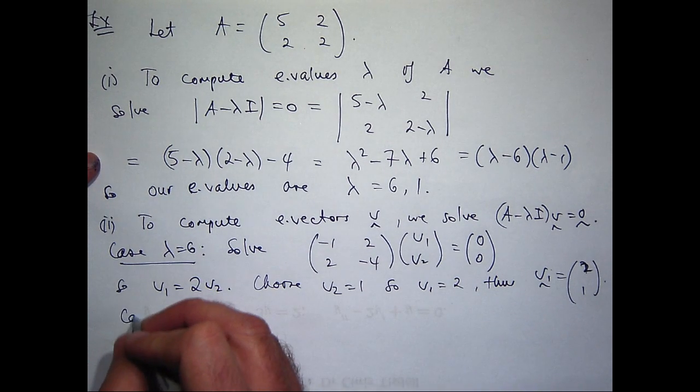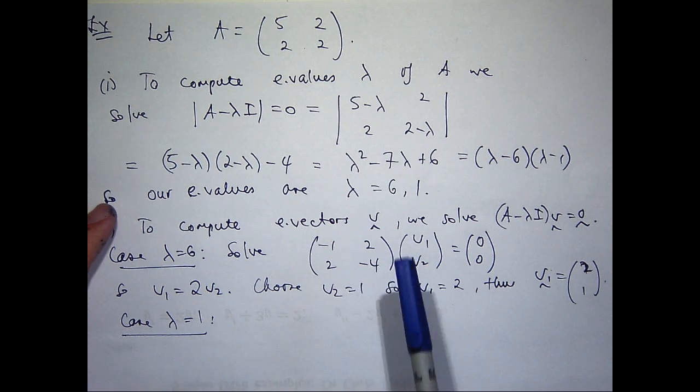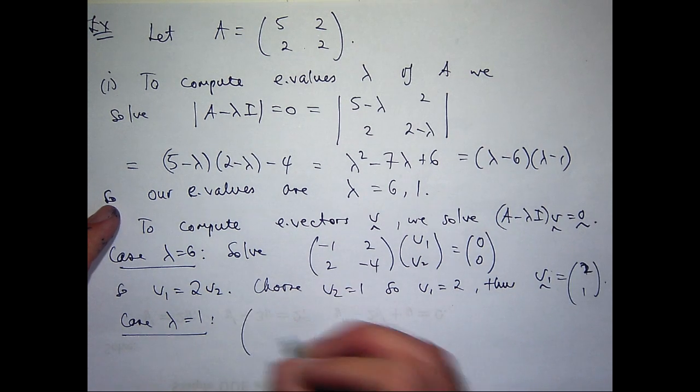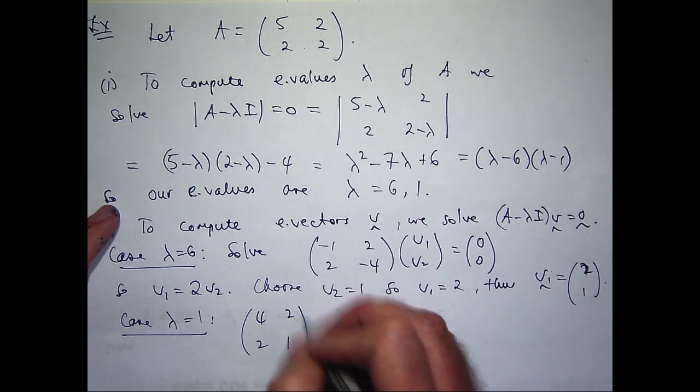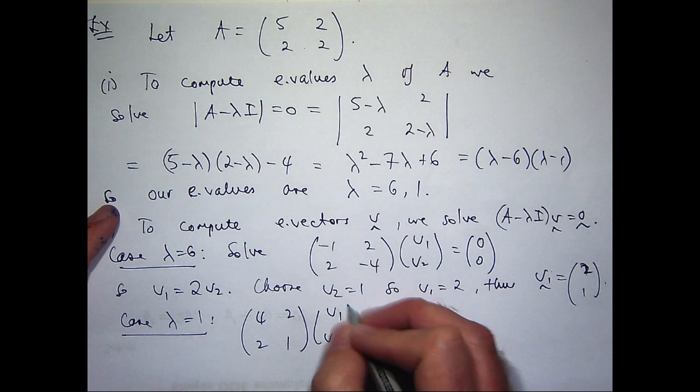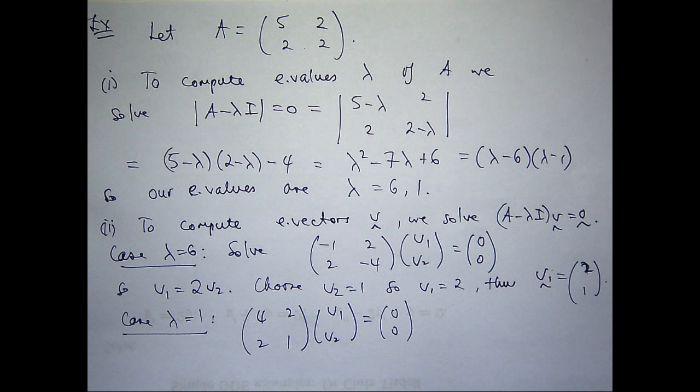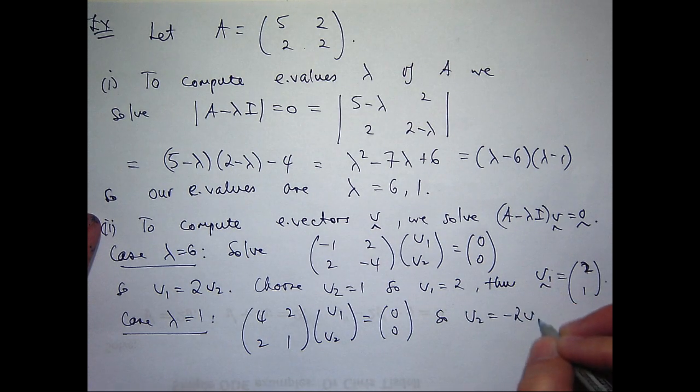Now for the case lambda equals 1, we want to solve this. So it would be A minus I times v equals to the zero vector. So it will be from here, say, 4, 1, 2 and 2. So say from the second row, you're going to get something like v2 equals minus 2v1.